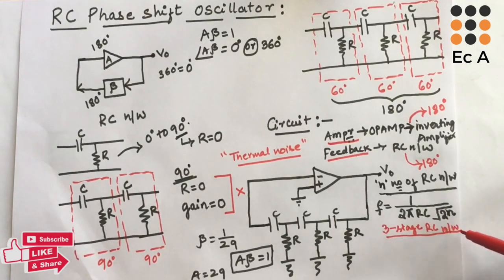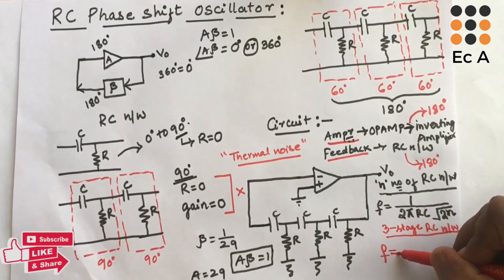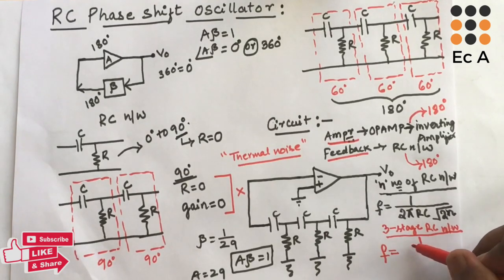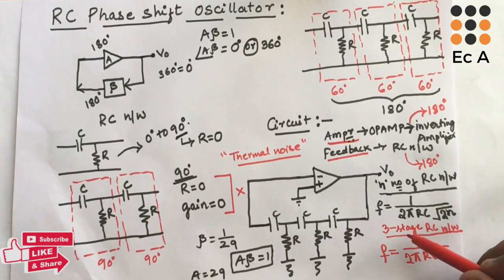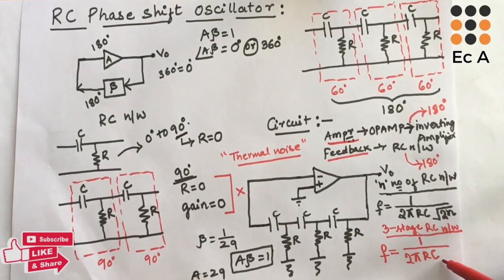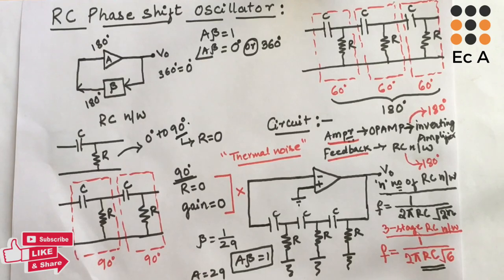For a 3-stage RC network, the frequency of oscillation is f = 1 / (2π·R·C·√6), since n = 3 and 3 × 2 = 6, giving √6. This is the frequency of oscillation for a 3-stage RC phase shift oscillator. Hope you have understood the topic.